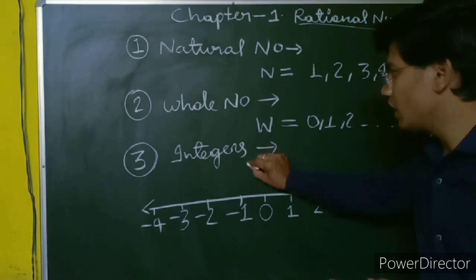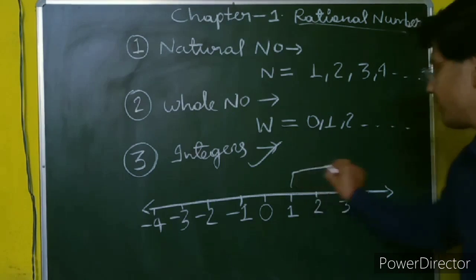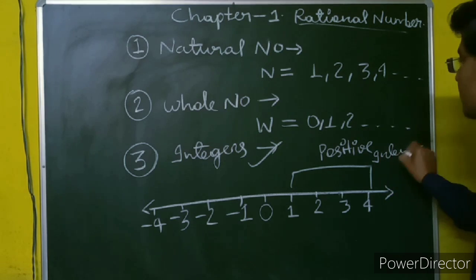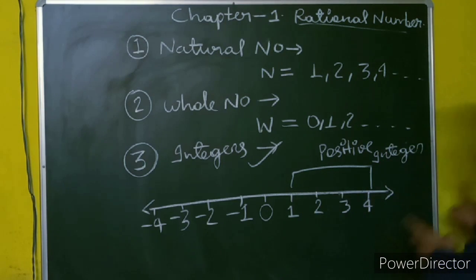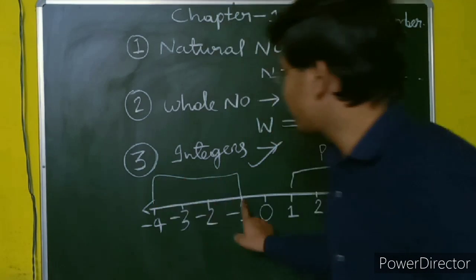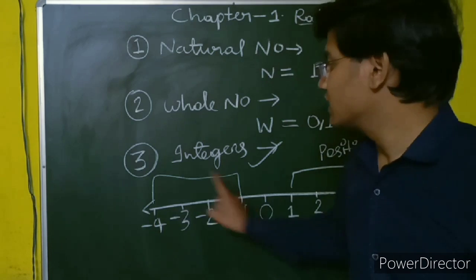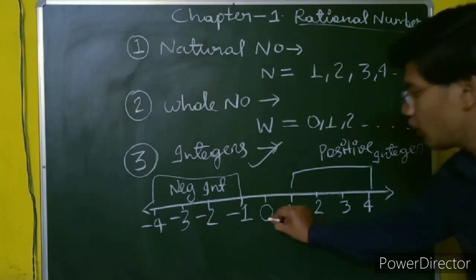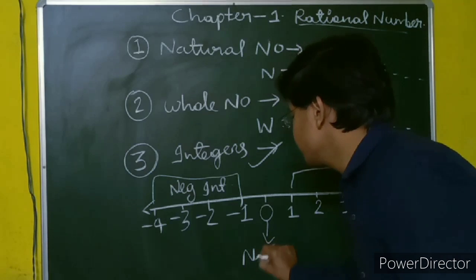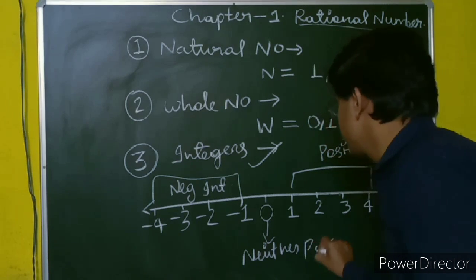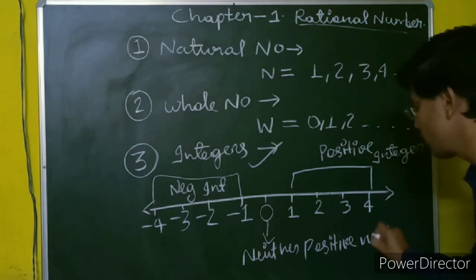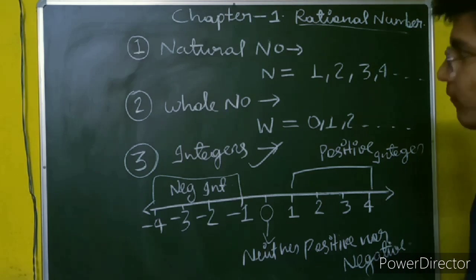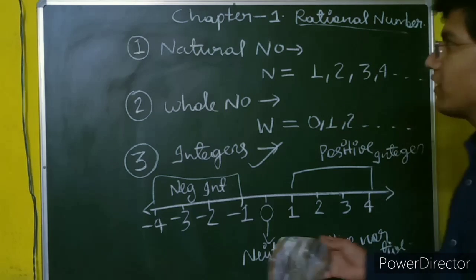Now we have to know about integers. The positive integers are 1, 2, 3, 4 and so on. The negative integers are minus 1, minus 2, minus 3, minus 4 and so on. And 0 is neither positive nor negative. Now let's move on to the rational numbers, which is our main topic of this chapter.